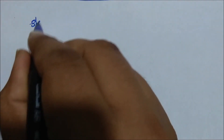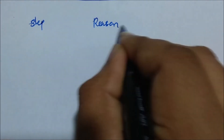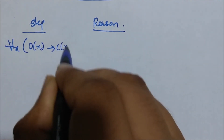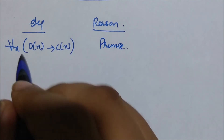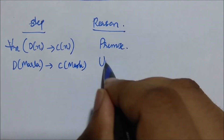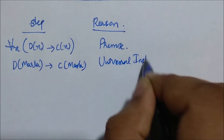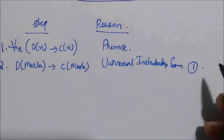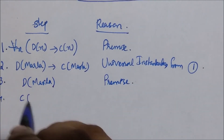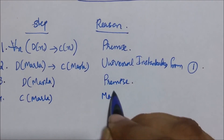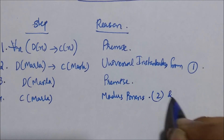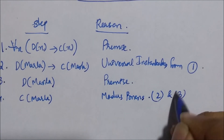We have to prove this is a valid argument — that if the premises are all true, then the conclusion is true. As a first step, we take the premise 'for all X, D of X implies C of X', and using the rule of universal instantiation, we get D of Marla implies C of Marla. D of Marla is the third premise. From the second and third statements and the rule of modus ponens, we get C of Marla. Hence, we conclude that C of Marla has happened and the argument is valid.